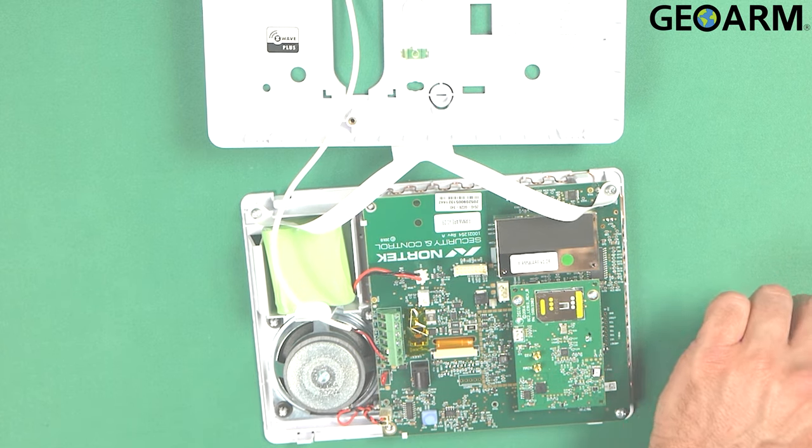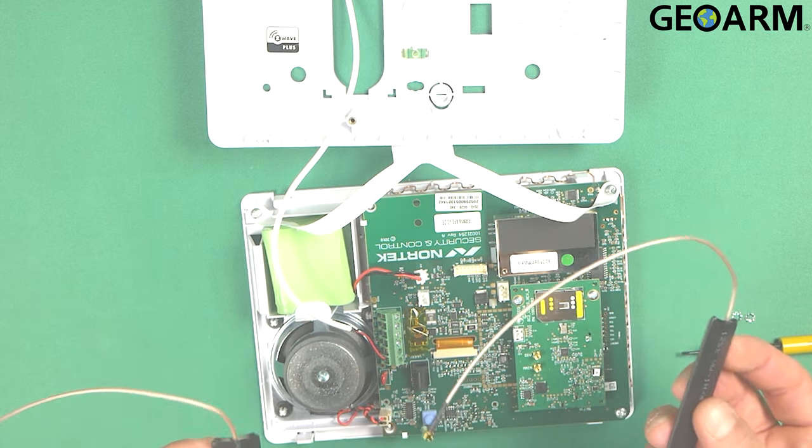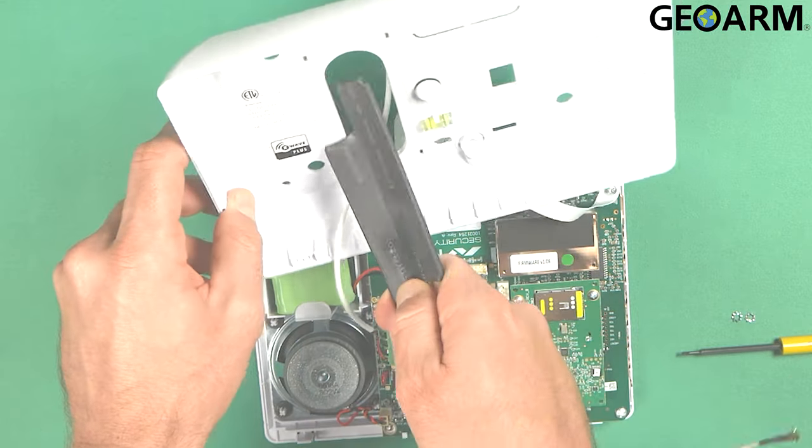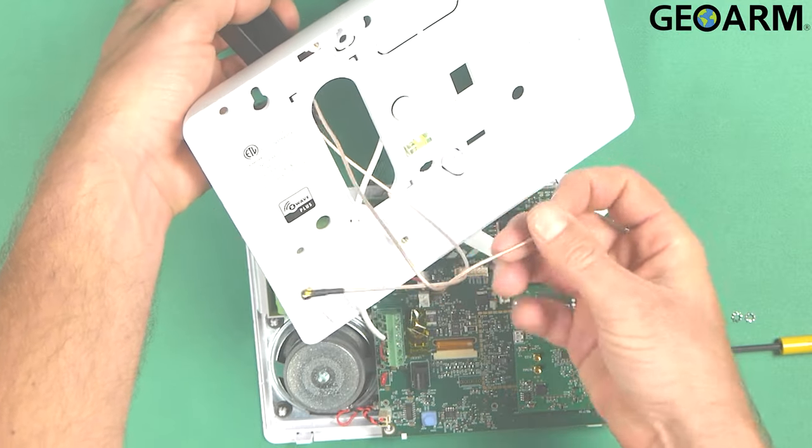Once that's tightened down, you're also going to notice that this device has come with two separate antennas. You are going to need to connect both of these antennas. Typically what I would recommend is that you just feed them out of the back plate here, and then you can just get them connected straight away inside.